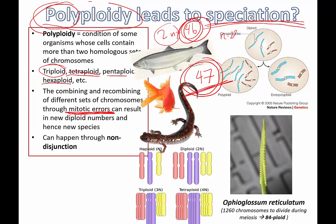Here's a famous example: Ophioglossum reticulatum. This organism is actually 84-ploid. Tetraploid is 4 copies, 5 copies, 6 copies — how do you say 84 copies? 84-ploid, I suppose. There must be a Latin way to say that, but that's too much to think about.